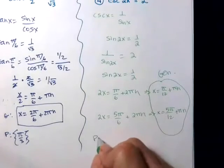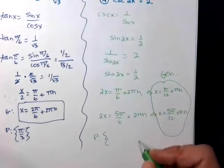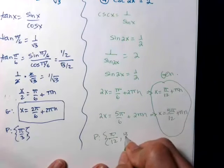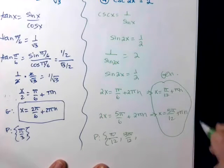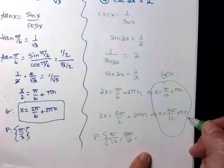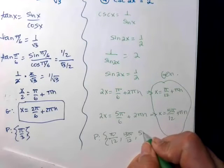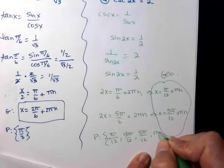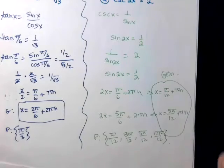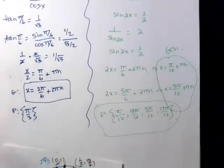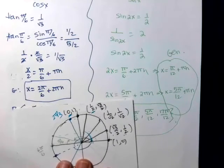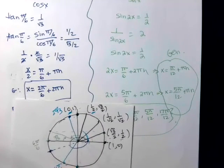To get the particular solutions, run through values of n. For pi twelfths plus pi n: n equals 0 gives pi twelfths; n equals 1 gives 13 pi twelfths; n equals 2 is 2pi plus something, so we're done. For 5 pi twelfths plus pi n: n equals 0 gives 5 pi twelfths; n equals 1 gives 17 pi twelfths. That's how you find general and particular solutions for trig equations using your unit circle. I highly recommend you have a unit circle — at least quadrant 1 — handy when you're doing these, so you can just look at your circle.